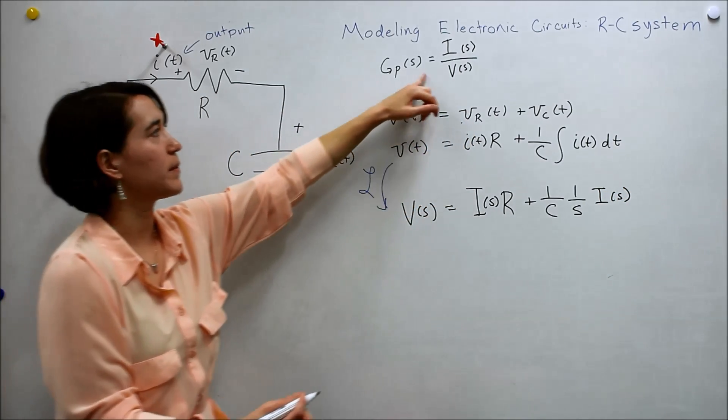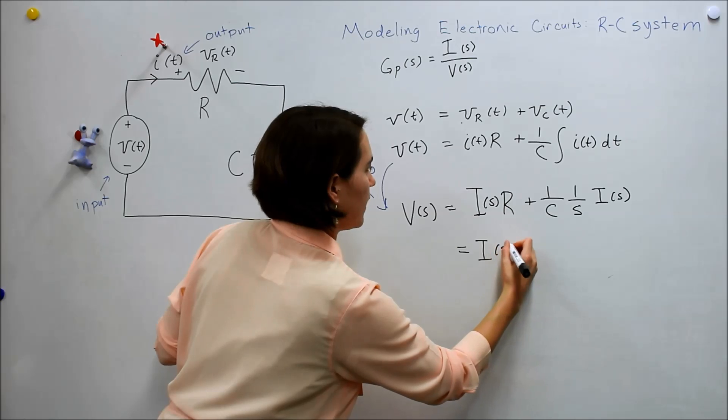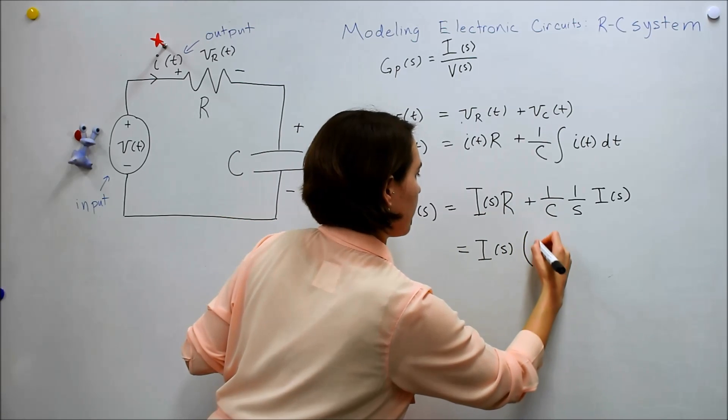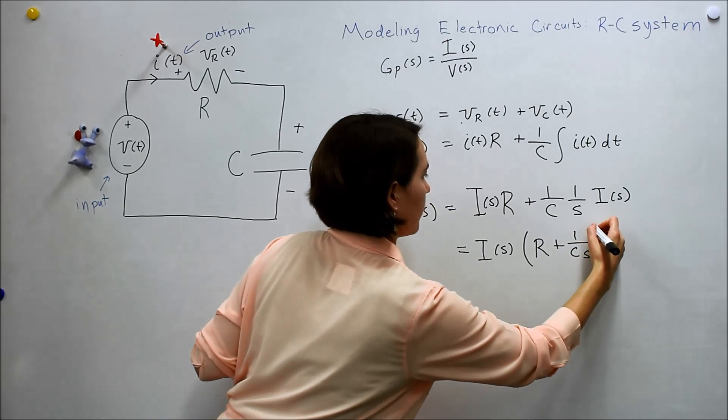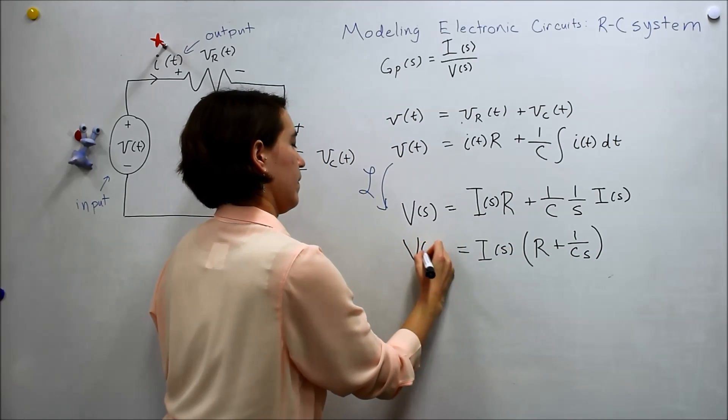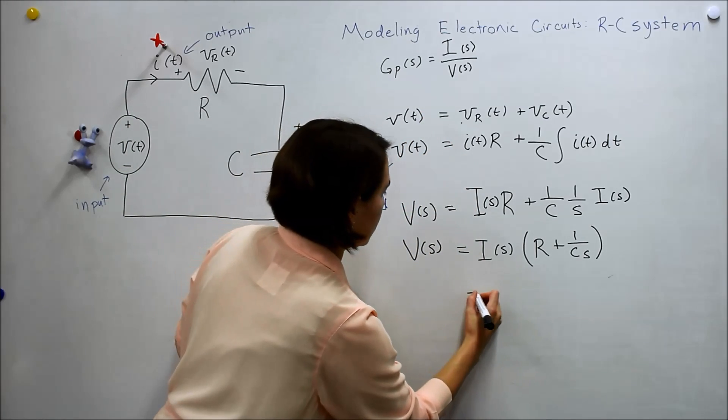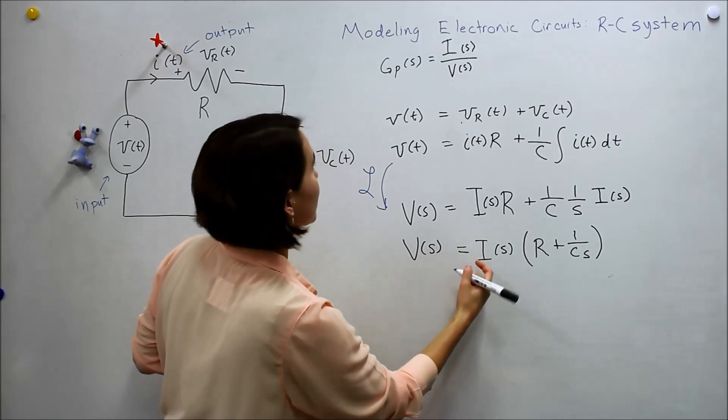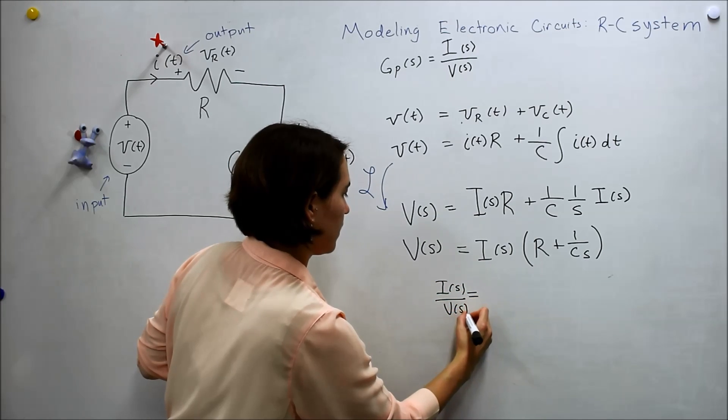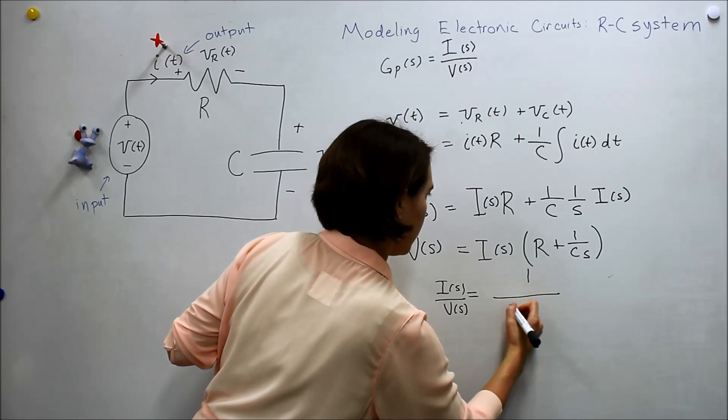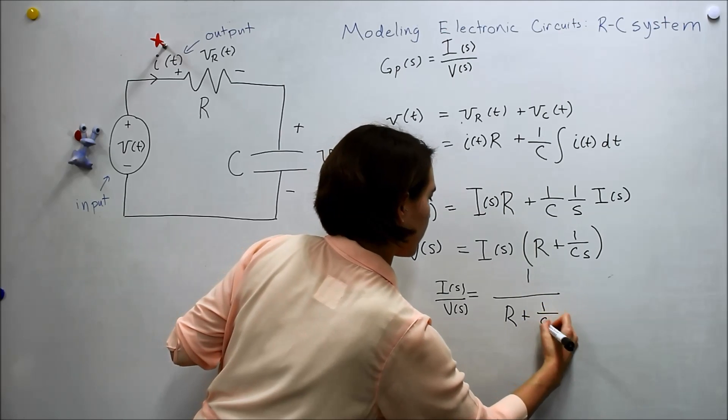So now we want to manipulate it into this equation again. And we'll take out an s from both sides here. All right. And then we want to manipulate it again to make it look like that. So we'll flip everything around and flip sides too. So we'll get i of s over v of s, 1 over r plus 1 over c s.